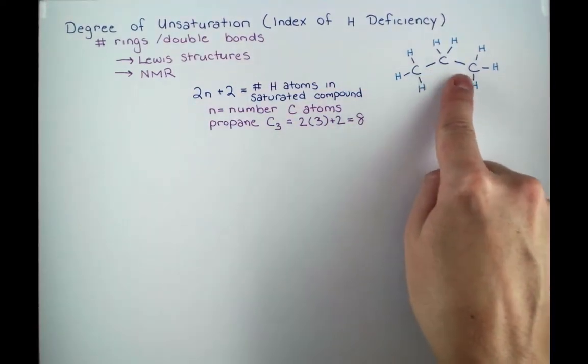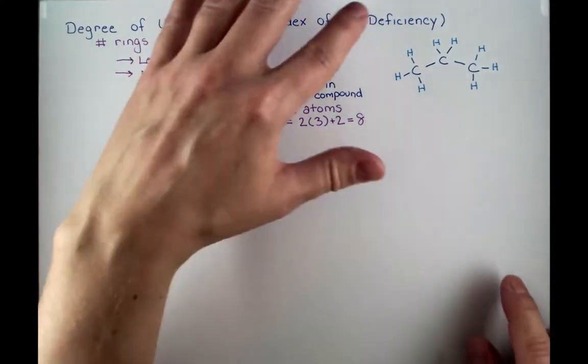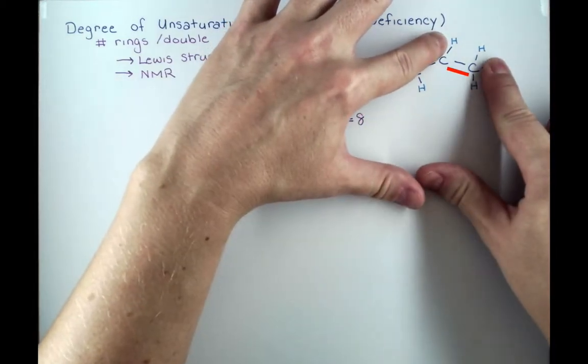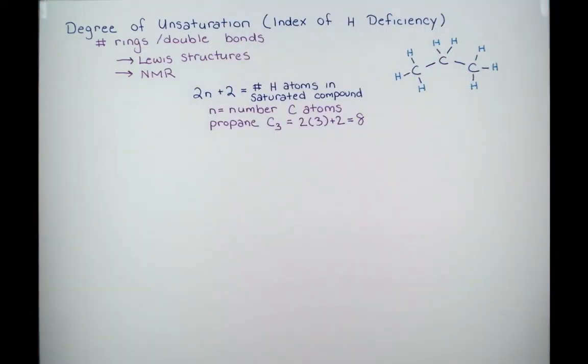Now imagine adding a double bond here. We need to get rid of one H atom on each carbon to add the double bond. So we can see when we introduce a ring or a double bond into our compound, it's going to decrease the number of hydrogen atoms in our formula by 2.